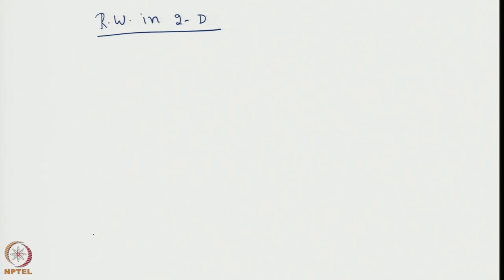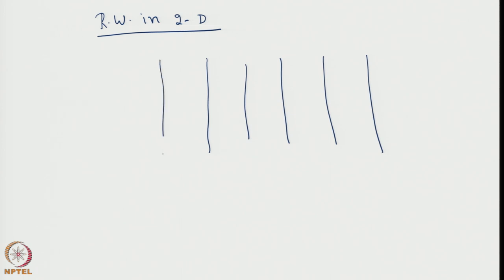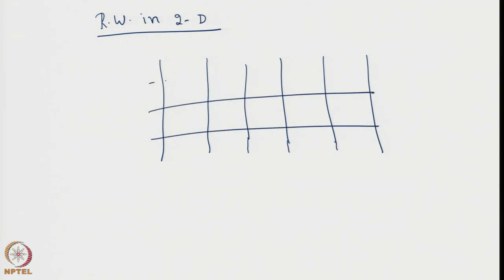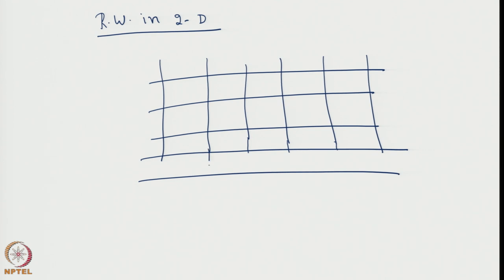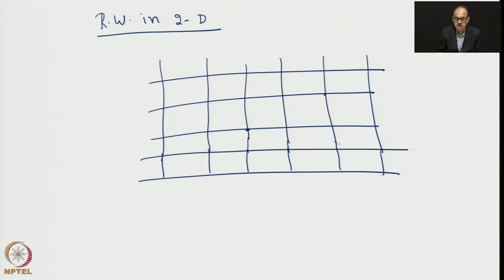Let us consider a rectangular or square lattice, where we have transitions along the x direction and transitions along the y direction as well. The lattice is equally spaced, going from x equal to minus infinity to plus infinity. We consider the origin and a general lattice point, specified through integers m1, m2, etcetera — equivalent to x and y coordinates. In three dimensions we would say m1, m2, m3, where all are integers 0, plus or minus 1, plus or minus 2, etcetera.